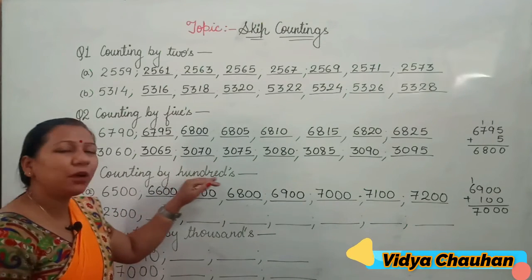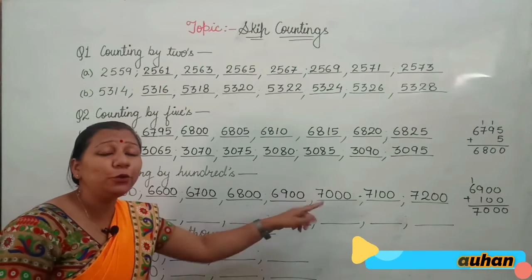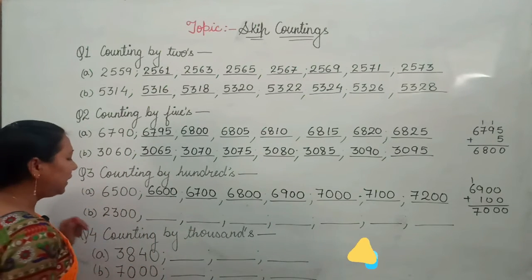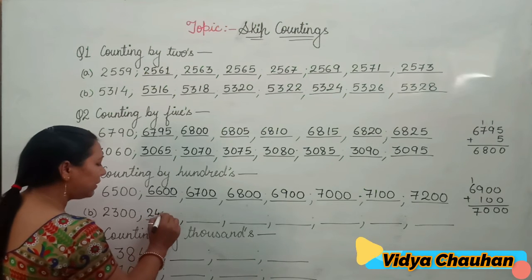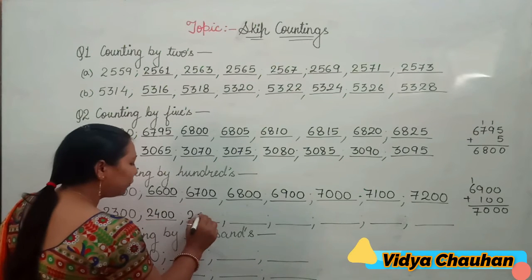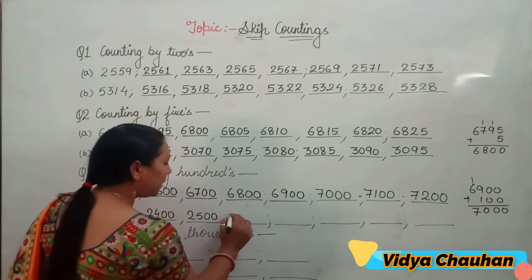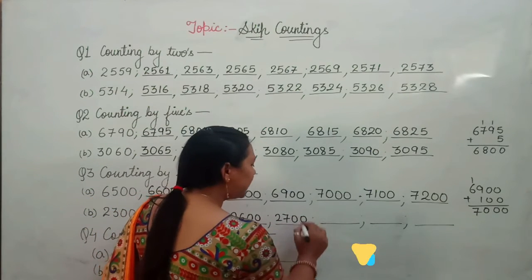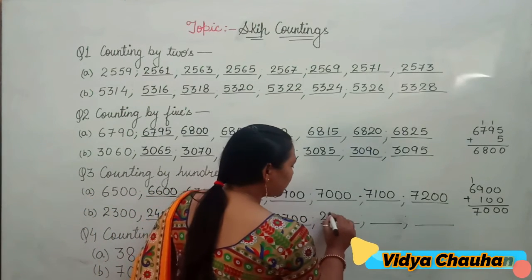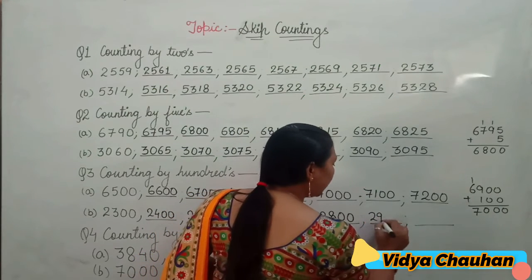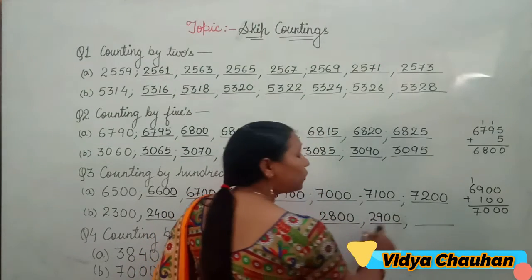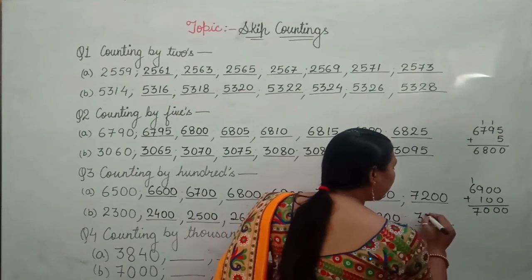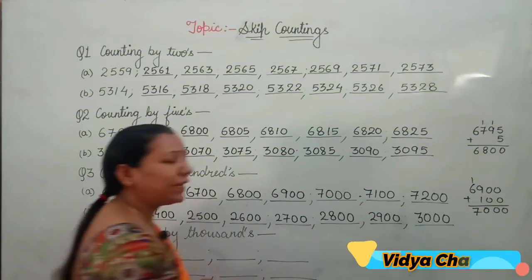For the next part of skip counting by 100, starting at 2300: the sequence is 2400, 2500, 2600, 2700, 2800, 2900, and then 2900 plus 100 equals 3000.